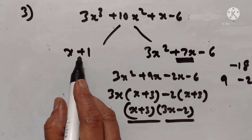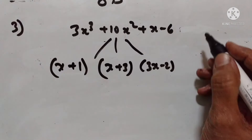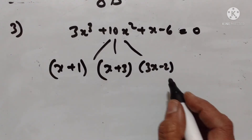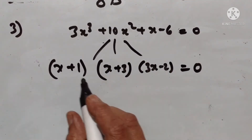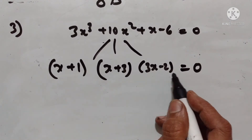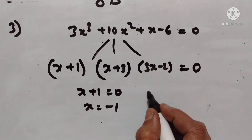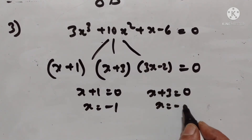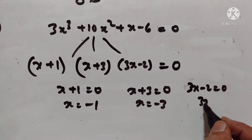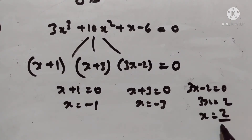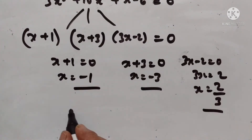These two are the factors of 3x² + 7x - 6. So the factors are (x + 1), (x + 3), and (3x - 2). Next, we have to solve the equation. The equation is (x + 1)(x + 3)(3x - 2) = 0. If x + 1 = 0, then x = -1. If x + 3 = 0, then x = -3. If 3x - 2 = 0, then 3x = 2, so x = 2/3. The values of x are -1, -3, and 2/3.